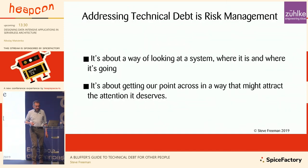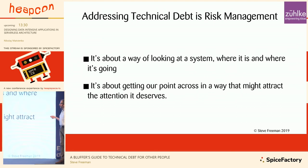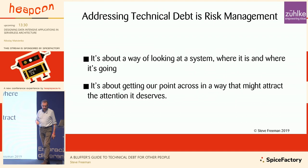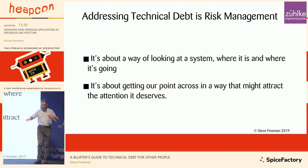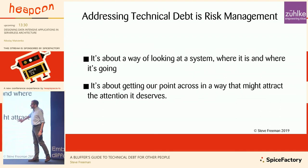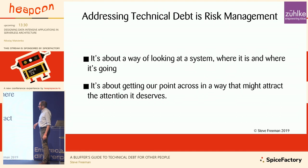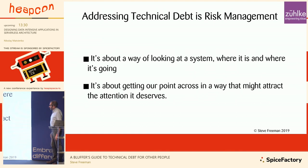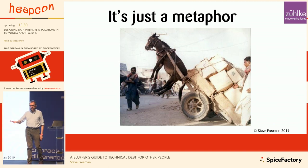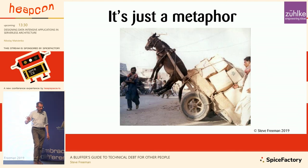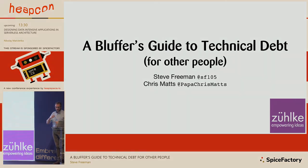Just to finish: it's about thinking about technical debt as risk management rather than just raw credit-card payment and interest. It's a way of looking at the system — where it is now, where it's come from, and where it's going — dynamically. It's also about getting our point across to certain people in a way that attracts the kind of attention it deserves, because otherwise we're just a bunch of moaning techies who don't really understand the business. And finally — it's just a metaphor. This is not a plan for a scientific method for accurately pricing codebases. It's a metaphor. It's a way of talking about things. Thank you very much.